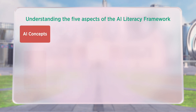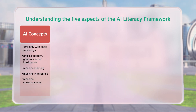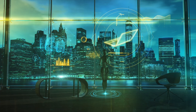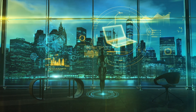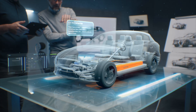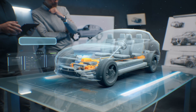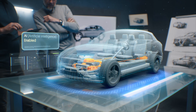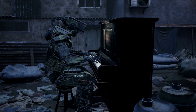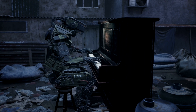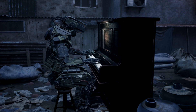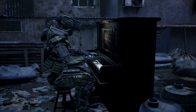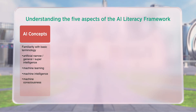One, AI concepts: be familiar with basic terminology such as artificial, narrow, general, and super intelligence, machine learning, machine intelligence, and machine consciousness to facilitate comprehension of how AI systems function.